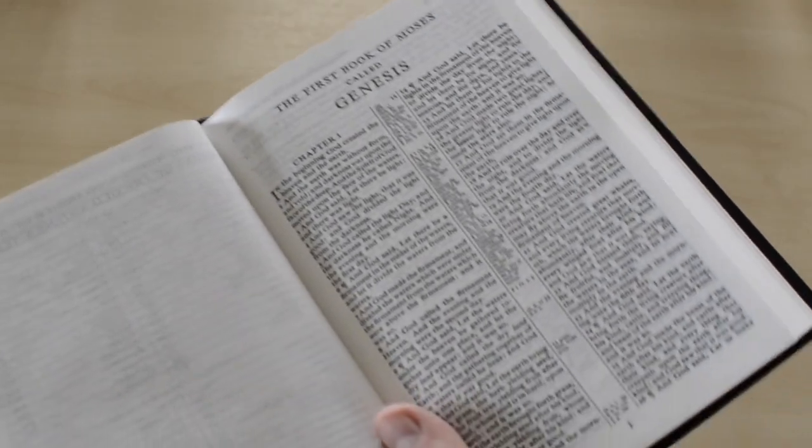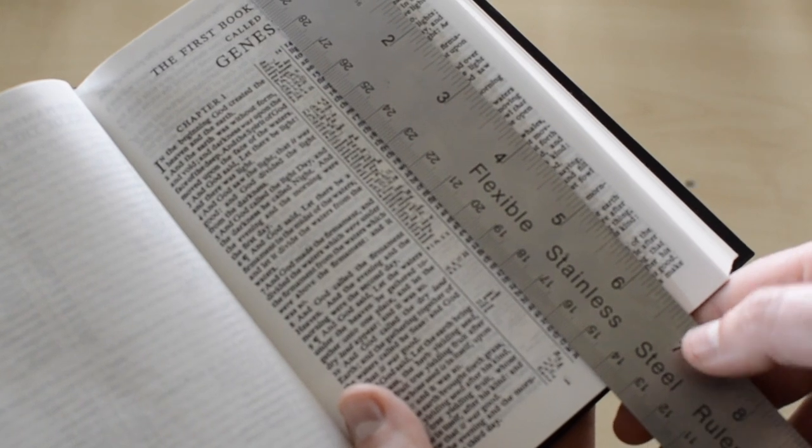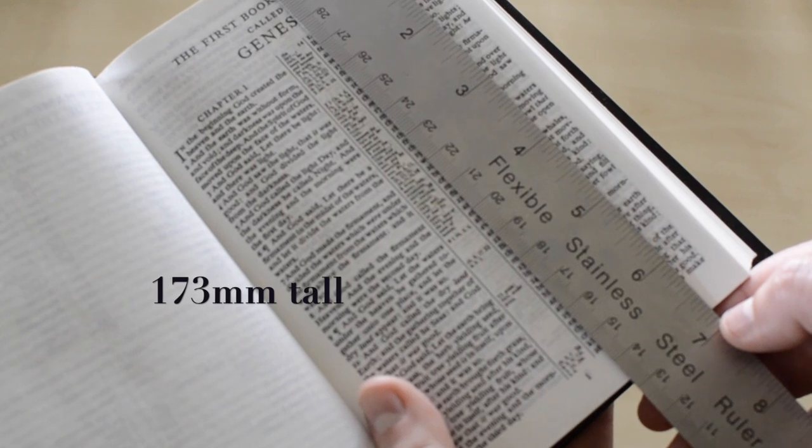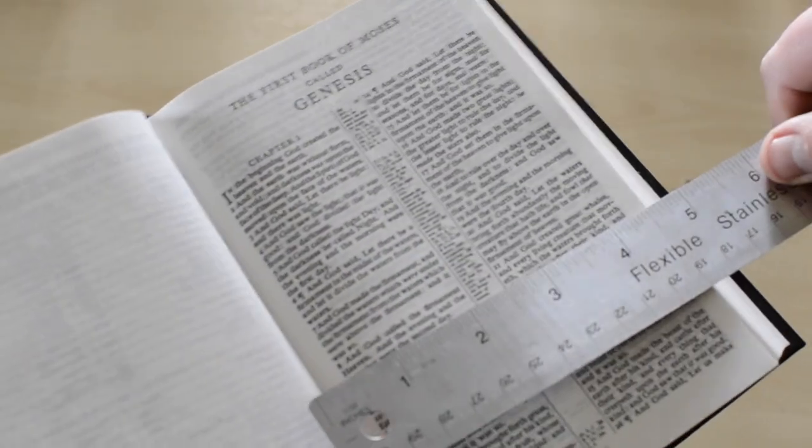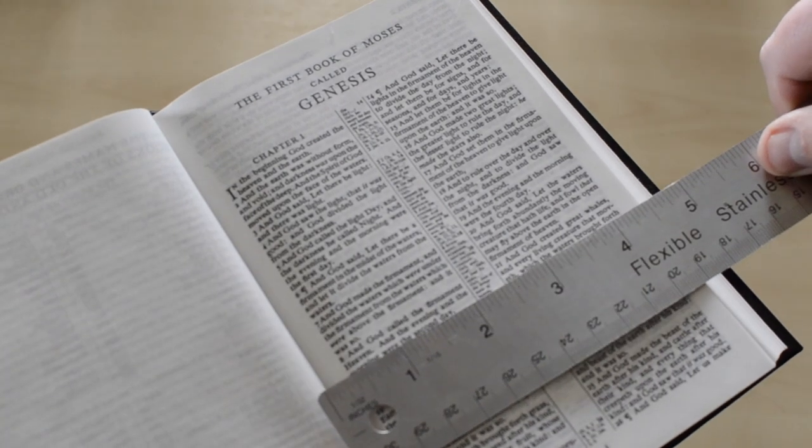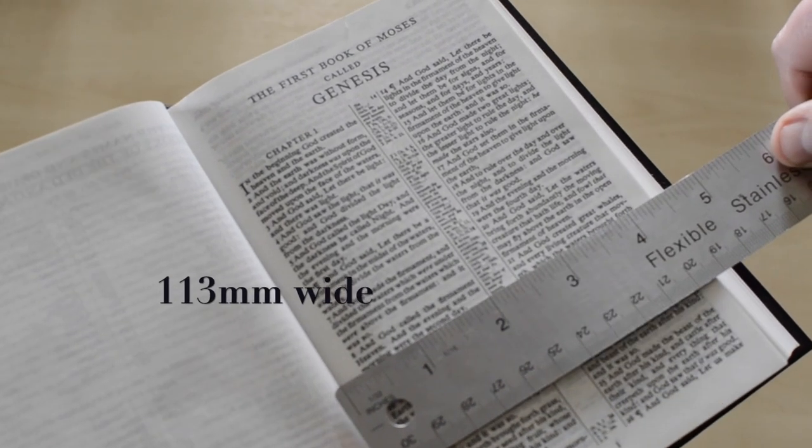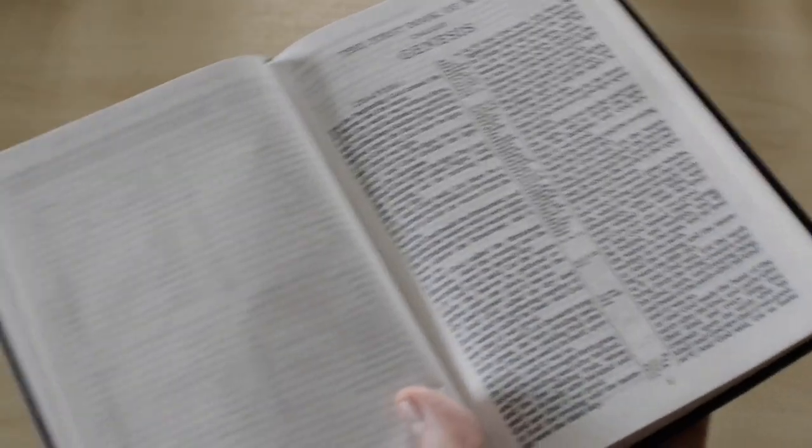Now, the size of this page, let me check it out, it's around six and three-quarters of an inch tall, and around a bit less than four and a half. That's how small this Bible is.